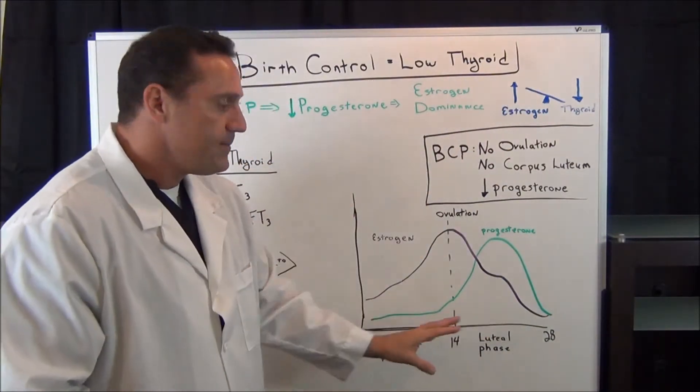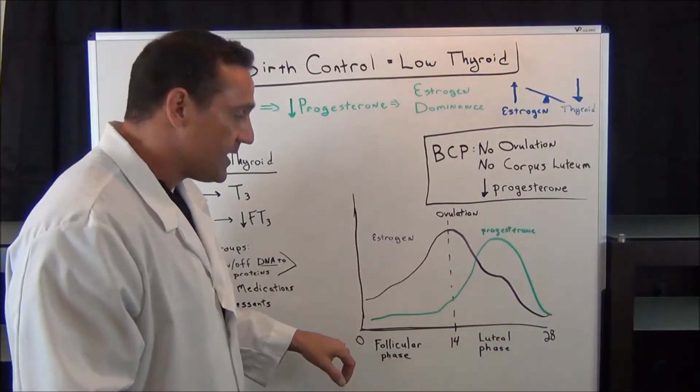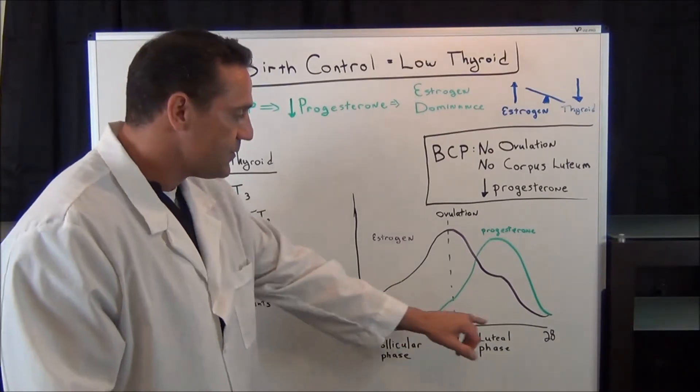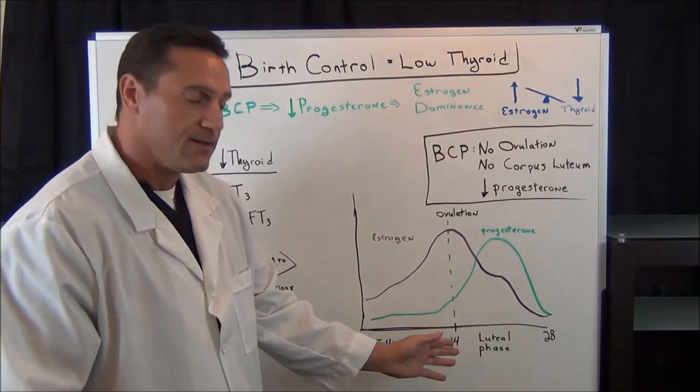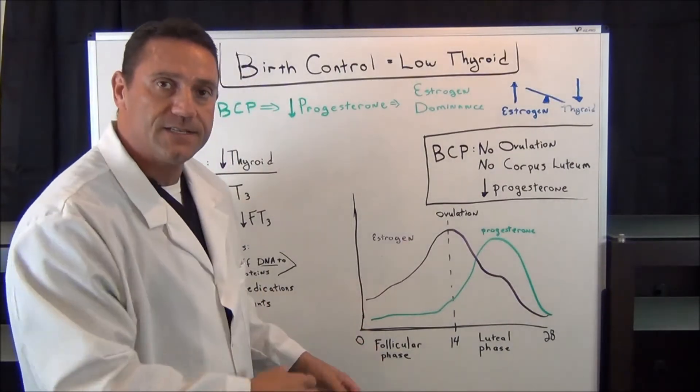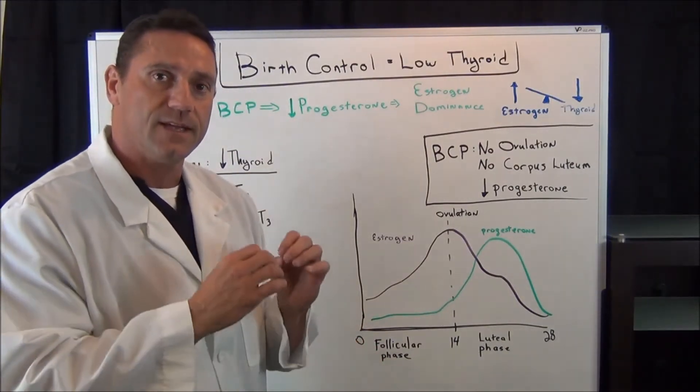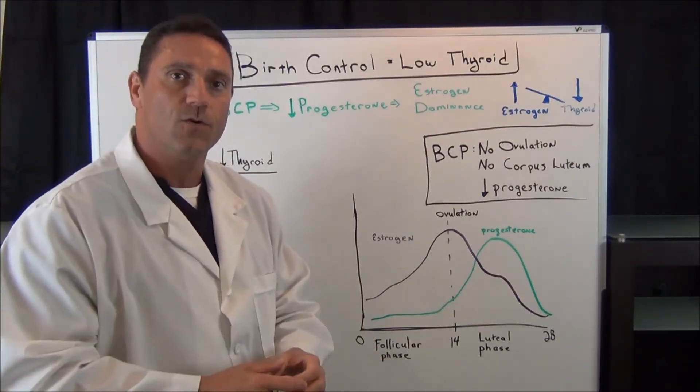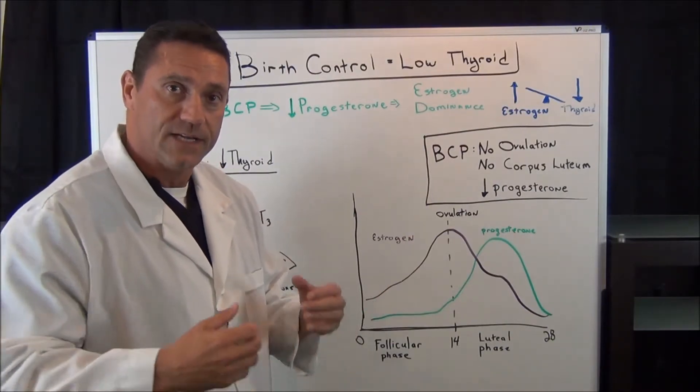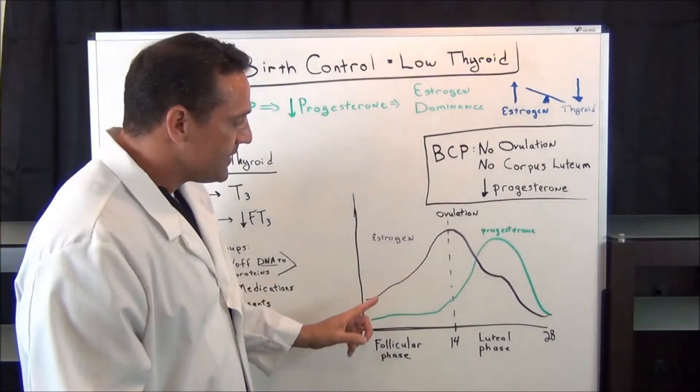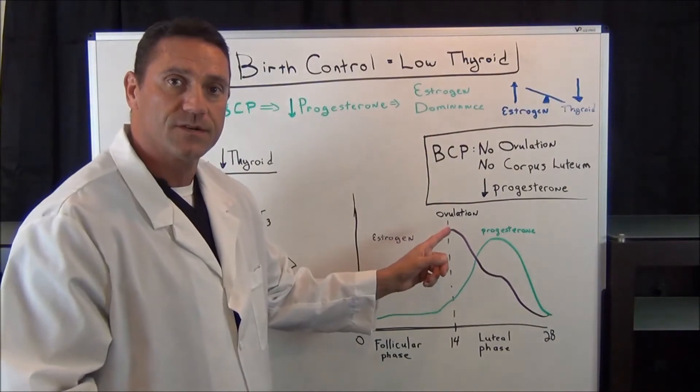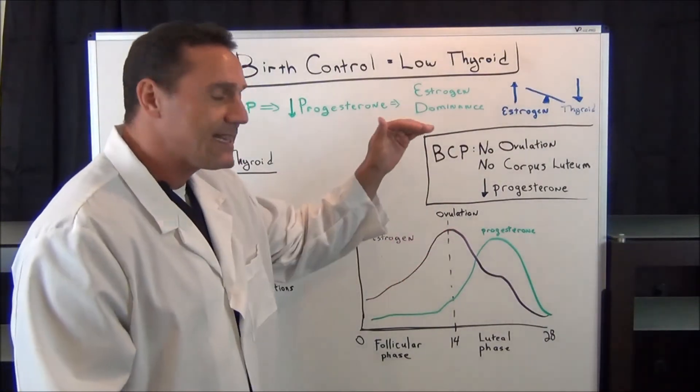Now this is the menstrual cycle. On average it's 28 days from 0 to 28 where ovulation occurs on day 14. So the first half of the phase is the follicular phase. This is when the follicle inside the ovary, the egg inside the ovary is growing. And then finally about day 14, you get a hormonal surge, luteinizing hormone, that releases the egg.